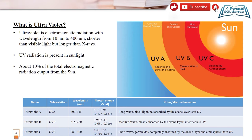I have given you a diagram here showing the sun, in which ultraviolet has been classified. There is UV-A, UV-B, and UV-C — called Ultraviolet-A, Ultraviolet-B, and Ultraviolet-C — which is a classification according to wavelength.